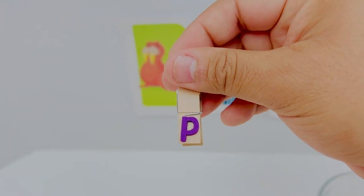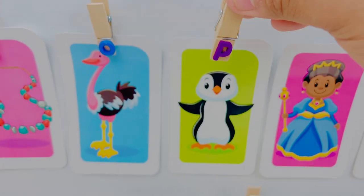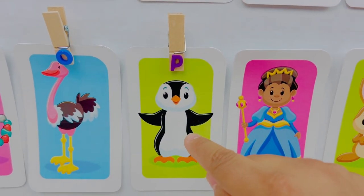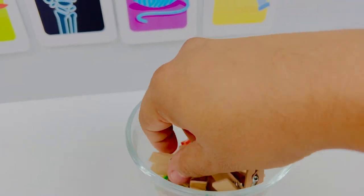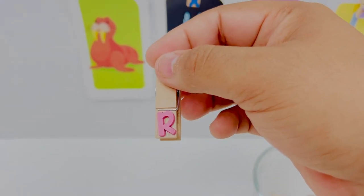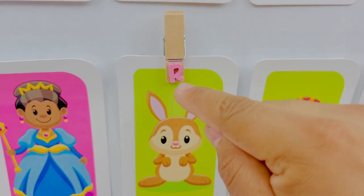This is letter P. Letter P is for penguin. P penguin. This is letter R. Letter R is for rabbit. R rabbit.